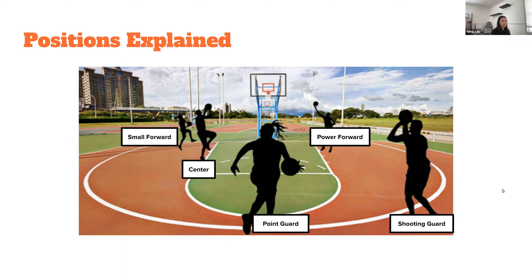The idea of positionless basketball is that players now can play anywhere on the court, and they're more dynamic and don't really confine to one position. I thought it'd be interesting to see if I could predict what position the players play in.